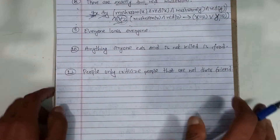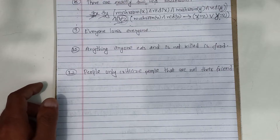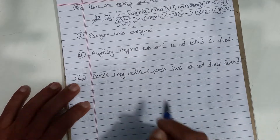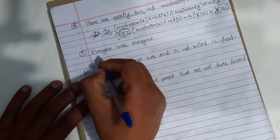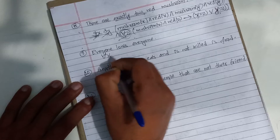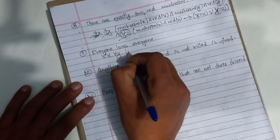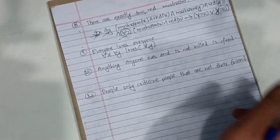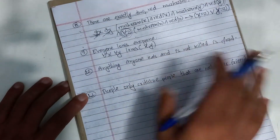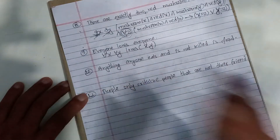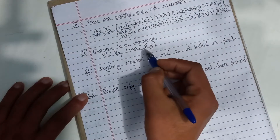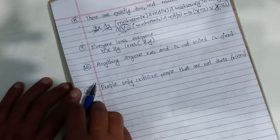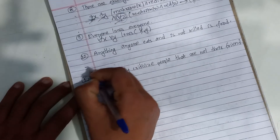Everyone loves everyone. For all X, for all Y, loves(X, Y). I mean it's implicitly person — for all X, for all Y, loves(X, Y). This is very simple.